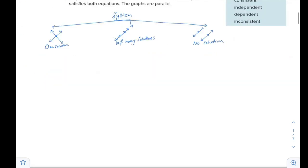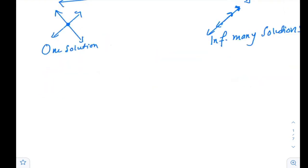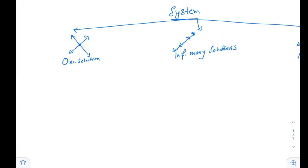Now, after that, you might be asked to classify these solutions, classify the system. If you have one solution or infinitely many solutions, then we can say that the system is consistent. There is some consistency between them.